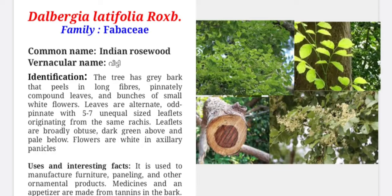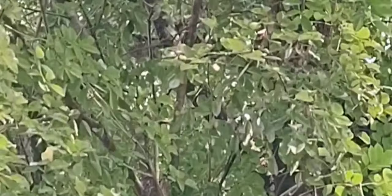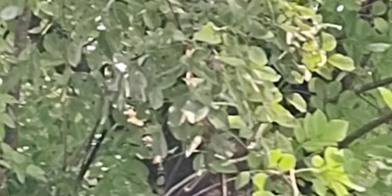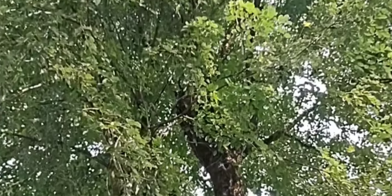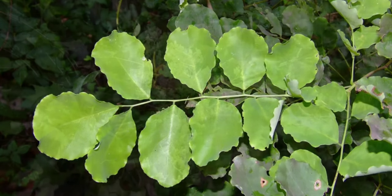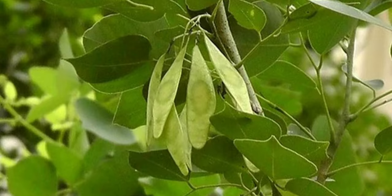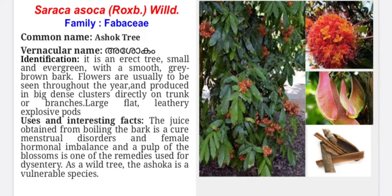Dalbergia latifolia comes under the family Fabaceae. Commonly named Indian rosewood and vernacularly named Veeti. The tree has gray bark that peels in long fibers, pinnately compound leaves and bunches of small white flowers. Leaflets are broadly obtuse, dark green above and pale below. Flowers are white in axillary panicles. It is used to manufacture furniture, paneling and other ornamental products. Medicines and an appetizer are also made from tannins in the bark.